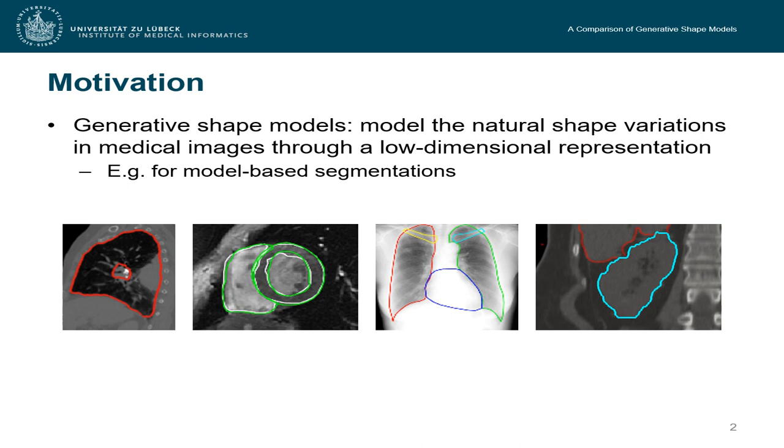As their name already describes, generative shape models model the natural shape variations in medical images, typically using a low dimensional representation, and they are very frequently used for model-based segmentations, since they constrain the natural shapes of the structures we want to segment.